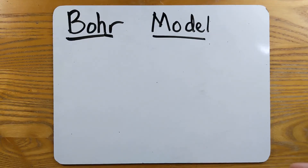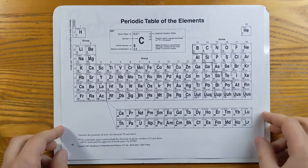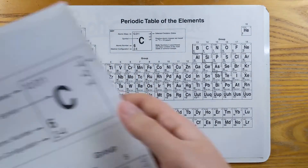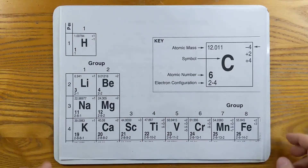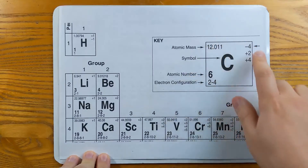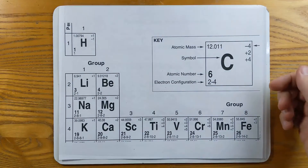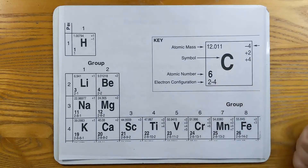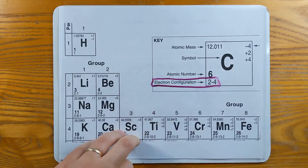The first thing we need to look at is the periodic table. If we zoom in to the key, or the legend, and look at one individual element tile, we notice that we have all the information we need for each element: the atomic mass, the symbol, the atomic number, and the electron configuration.